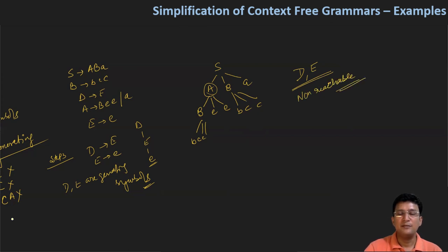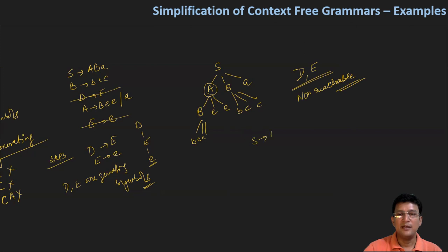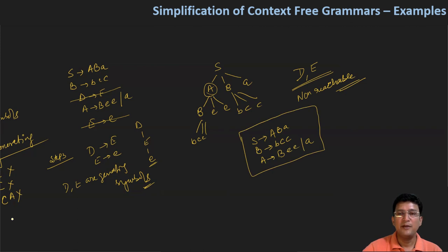Aur since these are non-reachable symbols, isliye ham inko eliminate kar denge. Inko bhi eliminate kar denge, aur inse related jo productions hain ham inko bhi eliminate kar denge. So ham ne D produces E ko eliminate kar denge aur E produces e ko bhi eliminate kar denge. Jo resultant grammar hamare paas bacha: S produces A, B, A; B produces small b, small c, small c; and A produces capital B, small e, small e, aur a. So this is the simplified grammar. We have done the simplification of the CFG by first removing the non-generating symbols and then removing the non-reachable symbols. We will take more examples in the next lecture. Thanks for watching.